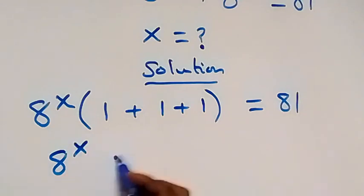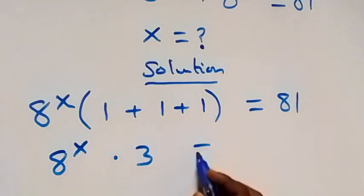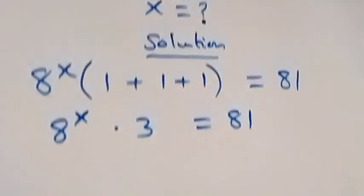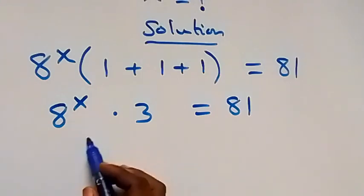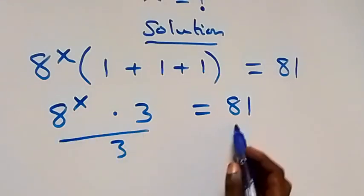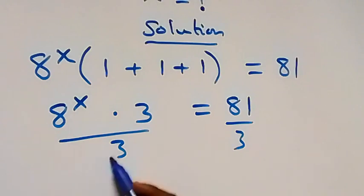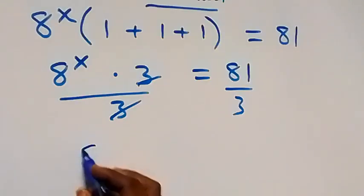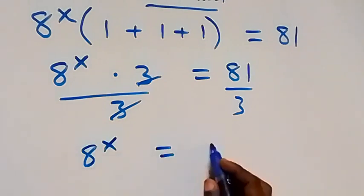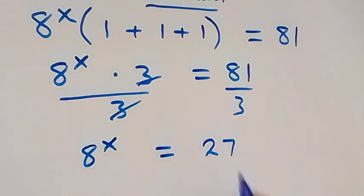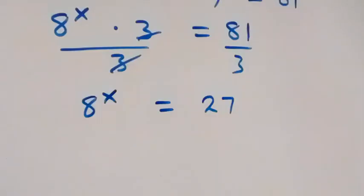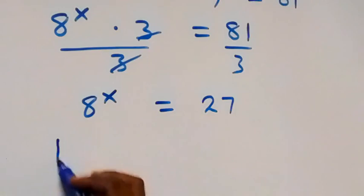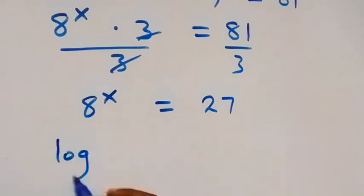From here, 1 plus 1 plus 1 is 3, so we have 8 raised to power x times 3 equals 81. Next, we divide both sides by 3. The 3 cancels out and we have 8 raised to power x equals 27.